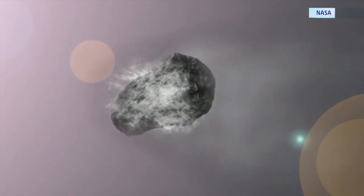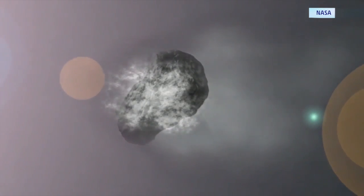Your comet will not cook evenly. The side facing the Sun will sublimate faster than the other side.